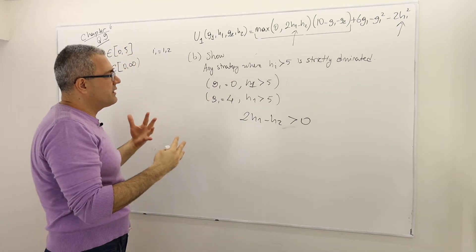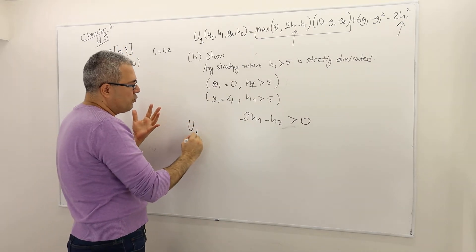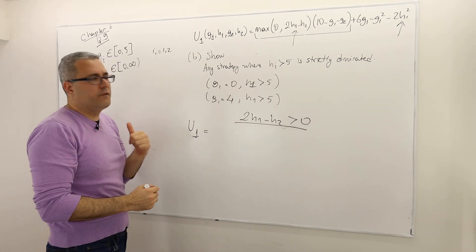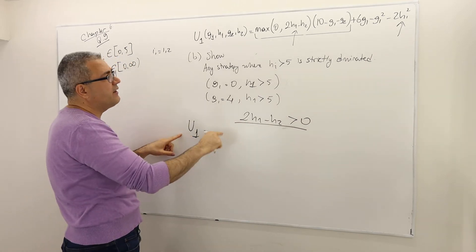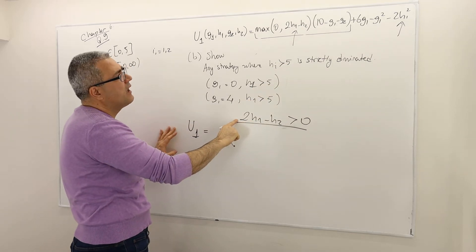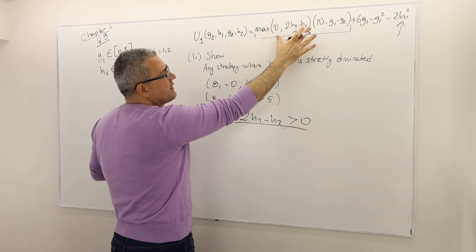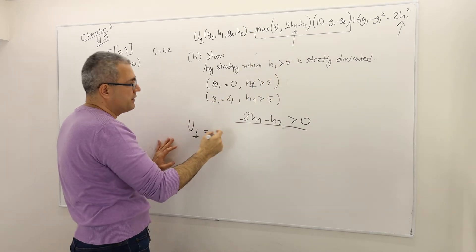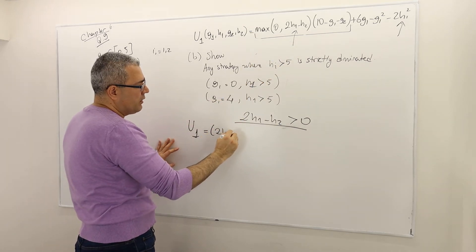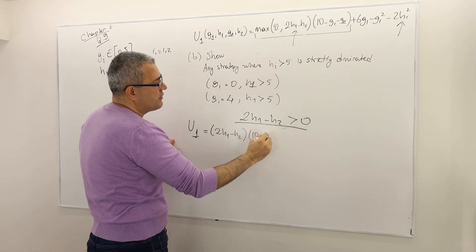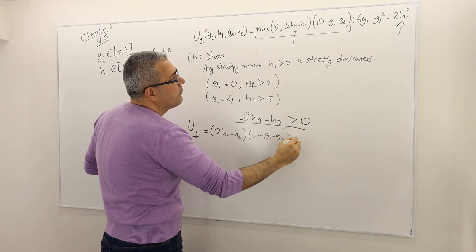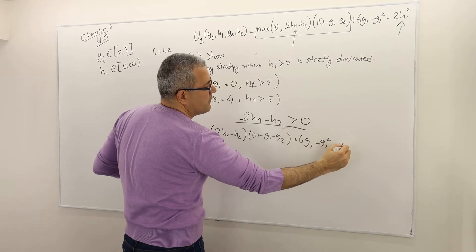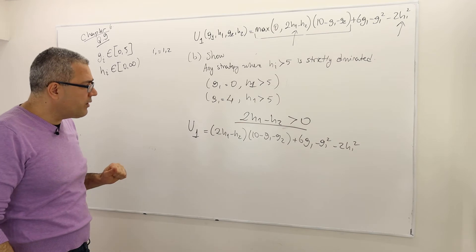So therefore, I need to understand how this utility function, U1, under this case, will behave as a function of H1. So write this function when this is the case. Well, when this is the case, this max is going to be equal to 2H1 minus H2. So therefore, the payoff function is going to be 2H1 minus H2 times 10 minus G1 minus G2 plus 6G1 minus G1 squared minus 2H1 squared.